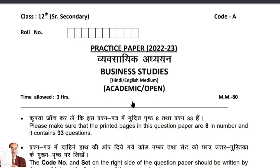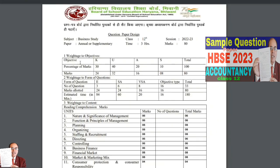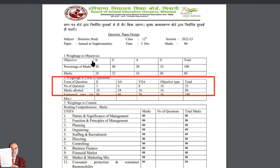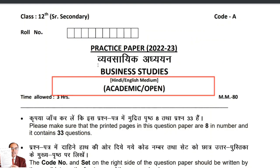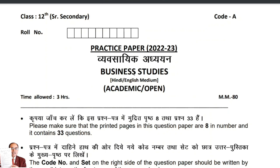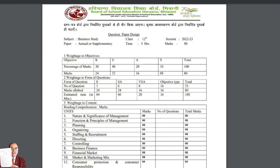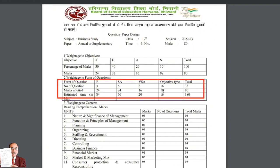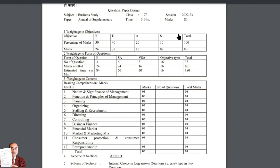We also have to do Accountancy and Economics, but today we are doing Business Studies for you. Three hours will be given, 80 marks will be there. This is for 12th class. The question paper will be printed in both English and Hindi. Let's look at the question paper design.